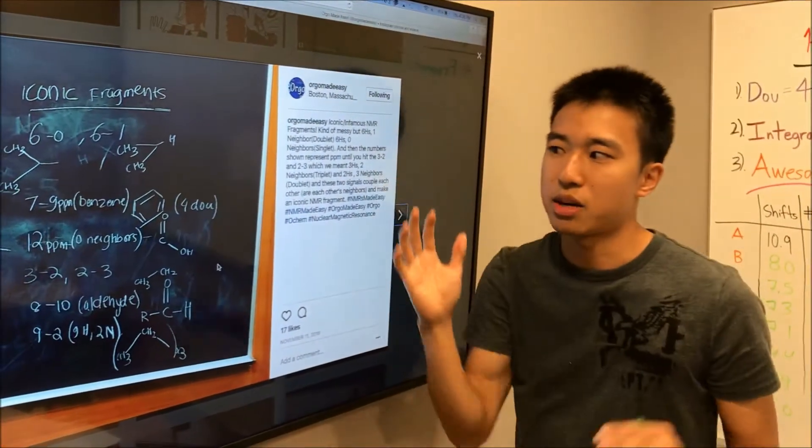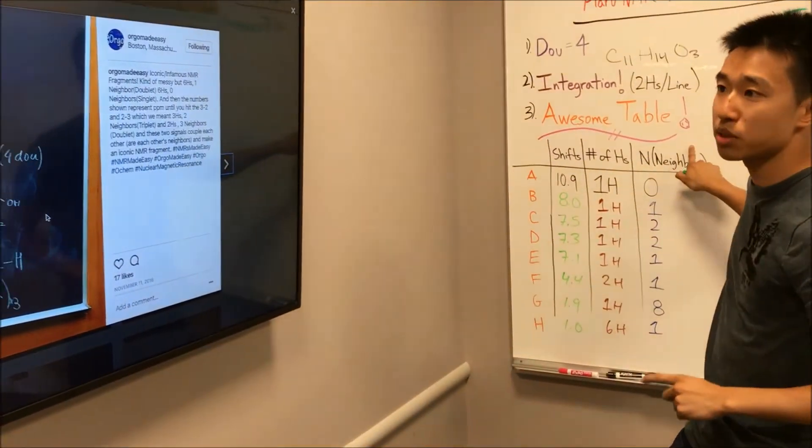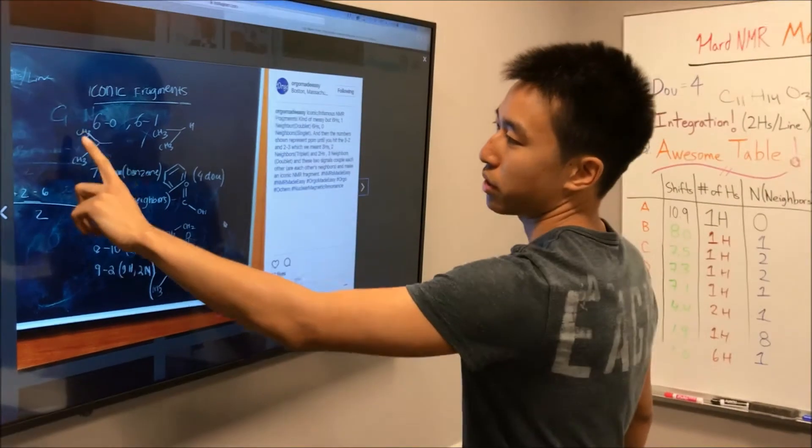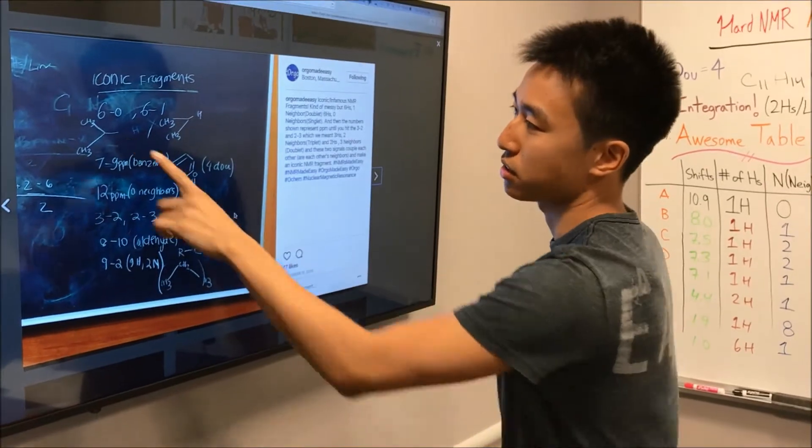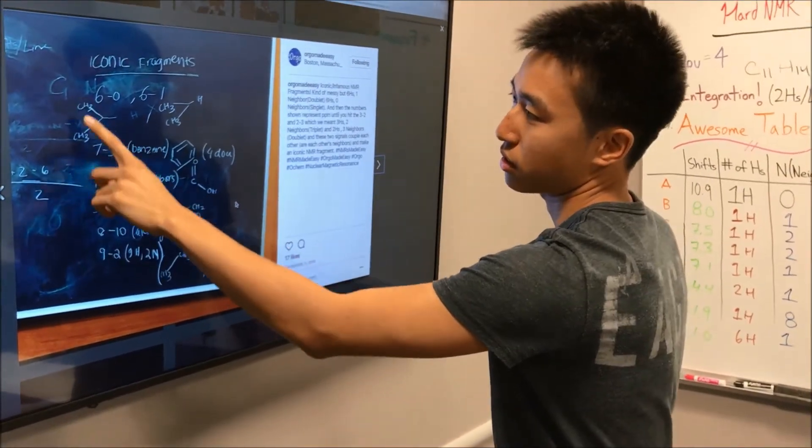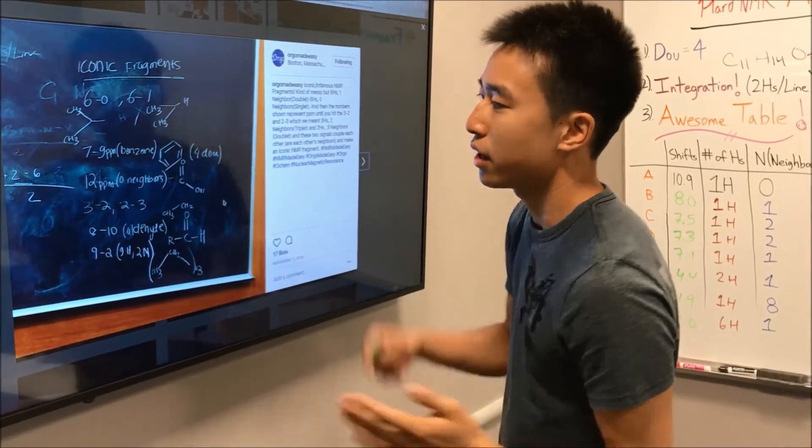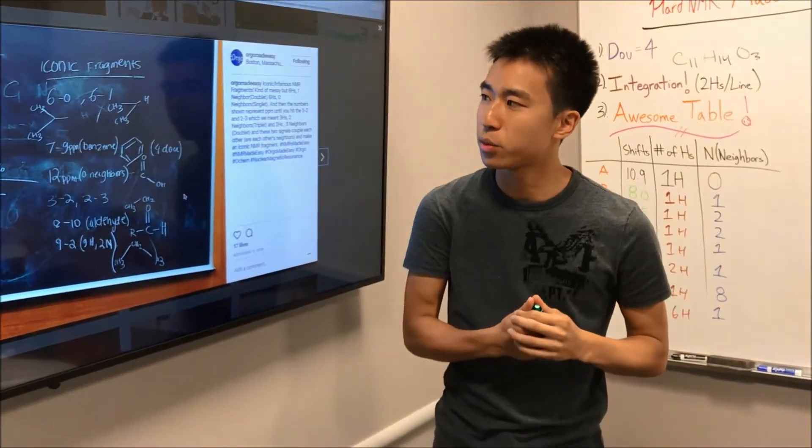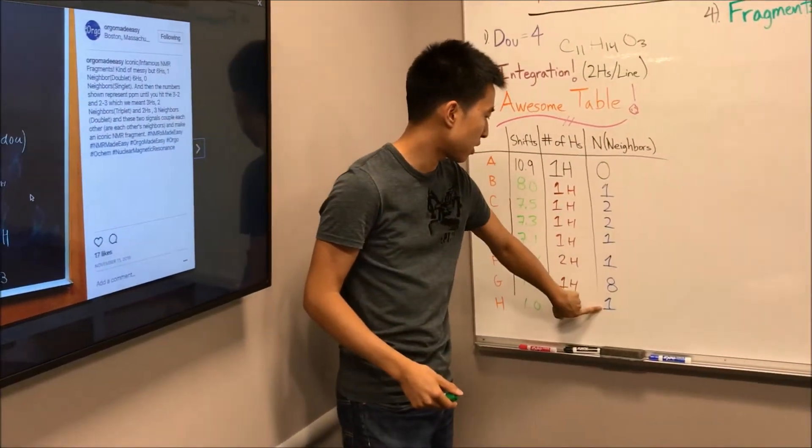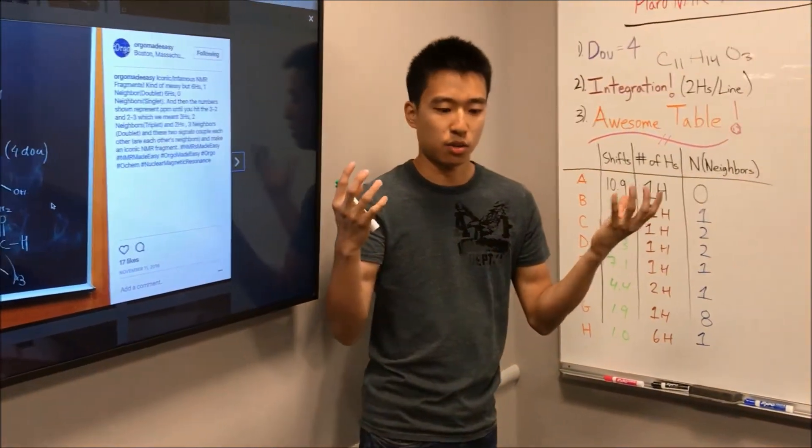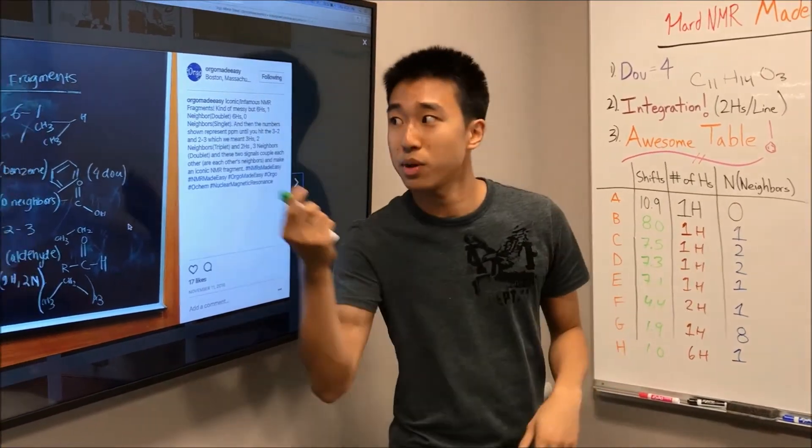Here we go. These are some of the iconic NMR fragments. It's when you have 6 hydrogens with 0 neighbors, it's almost guaranteed to be 2 methyl groups and a carbon. And this carbon can't be attached to any hydrogens, because otherwise these 6 hydrogens would have a neighbor. Like this. So I probably need to tweak this. But anyways, the one that I really wanted to start with is actually right here.